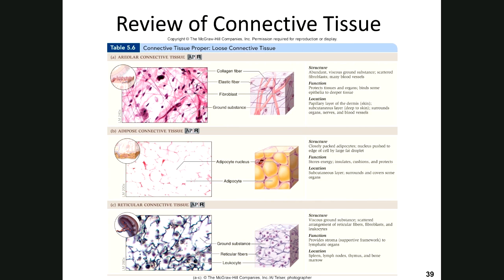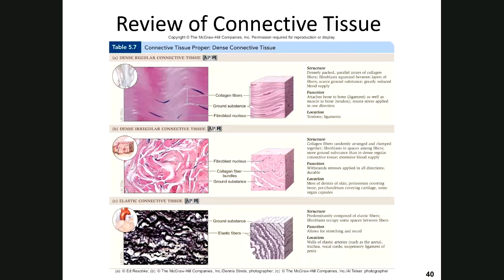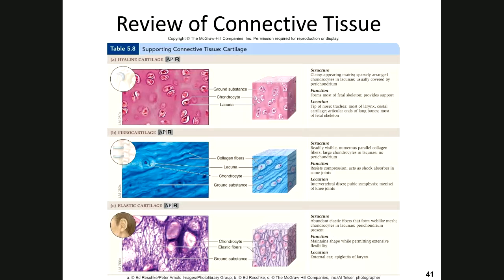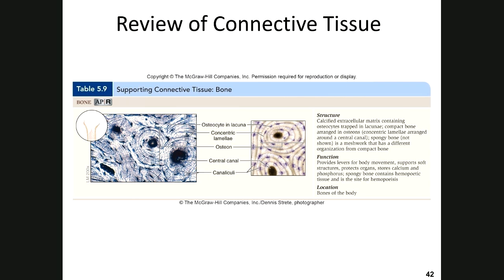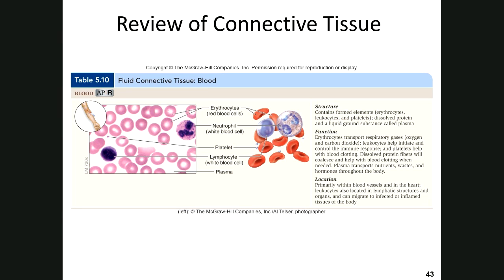In lab, if you see the words 'connective tissue' at the end of a tissue name, it is a type of CT proper — loose connective tissue, dense connective tissue, reticular connective tissue, and elastic connective tissue. Supportive connective tissues are bones and cartilage. Fluid connective tissues are blood and lymph.